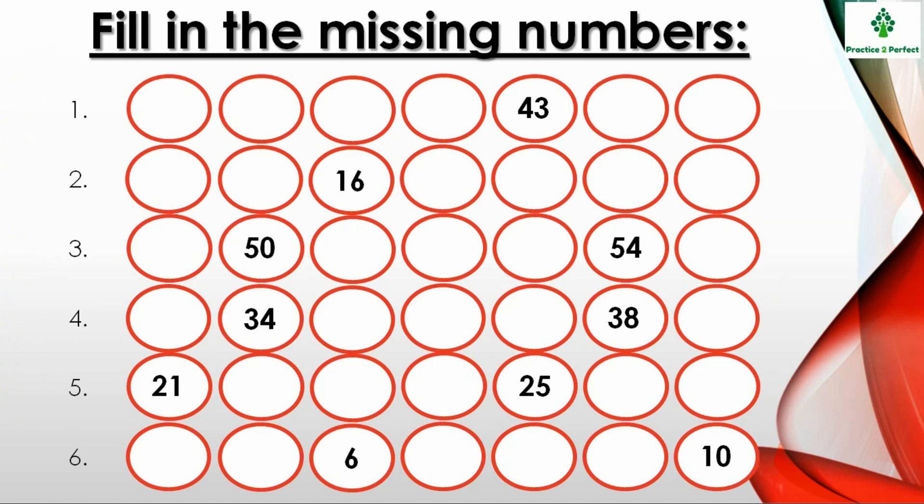Missing numbers. The trick to solve this is to find the number before and after number of the given number. Like in the question, the first question, if you see that number 43 is given.